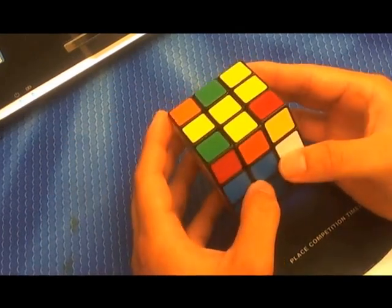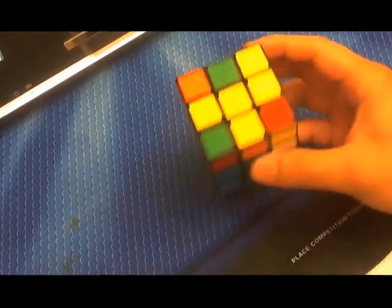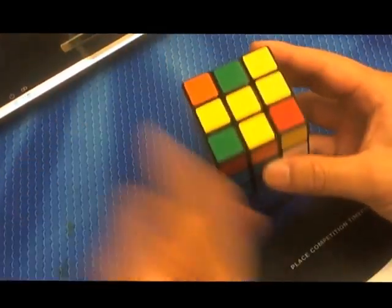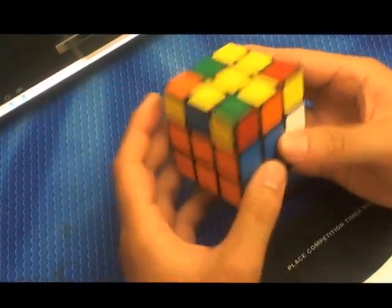And from here, what you do is you recognize your corner permutation with four corners. And this is very difficult.